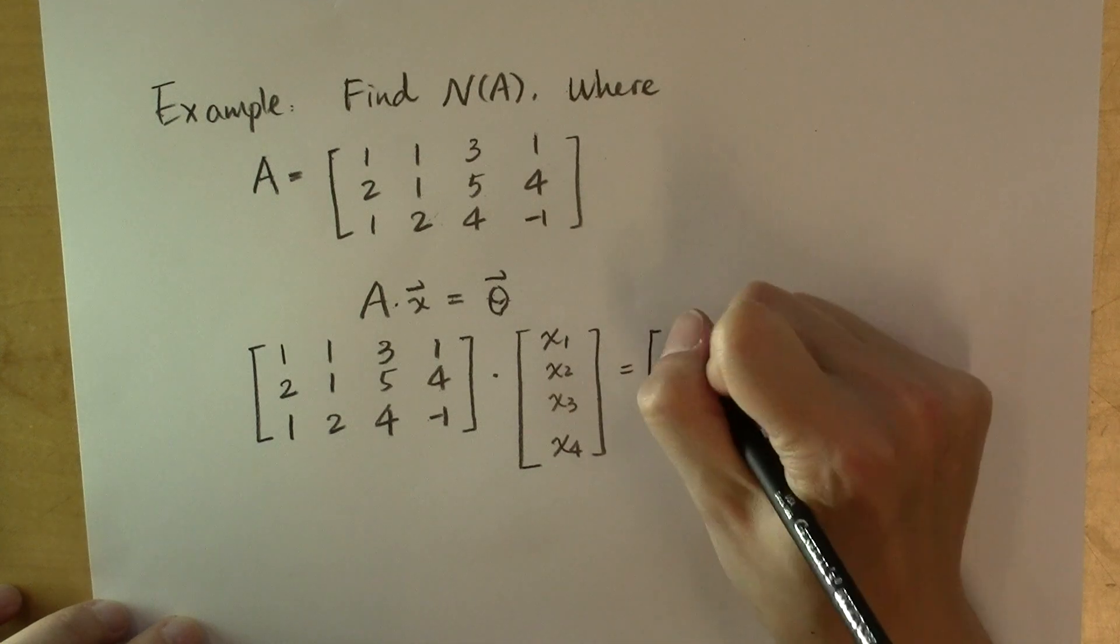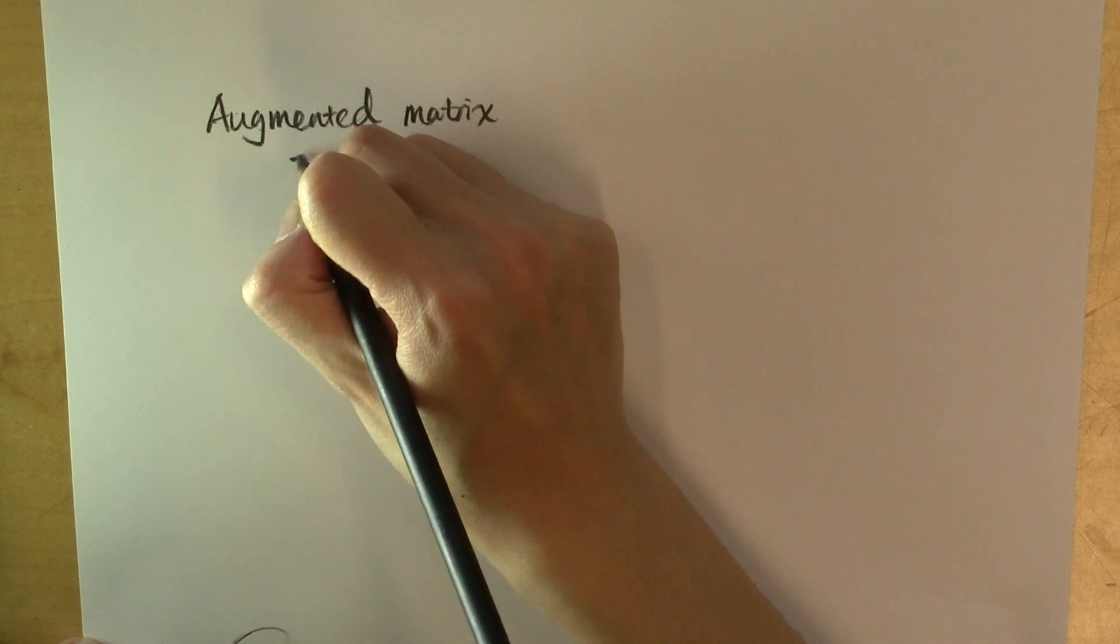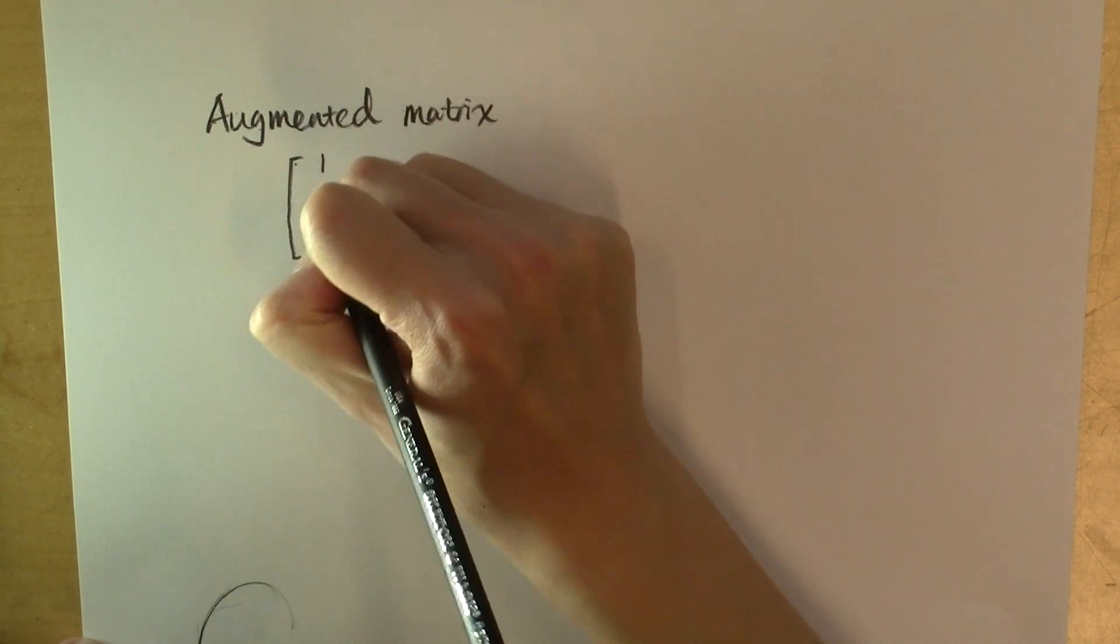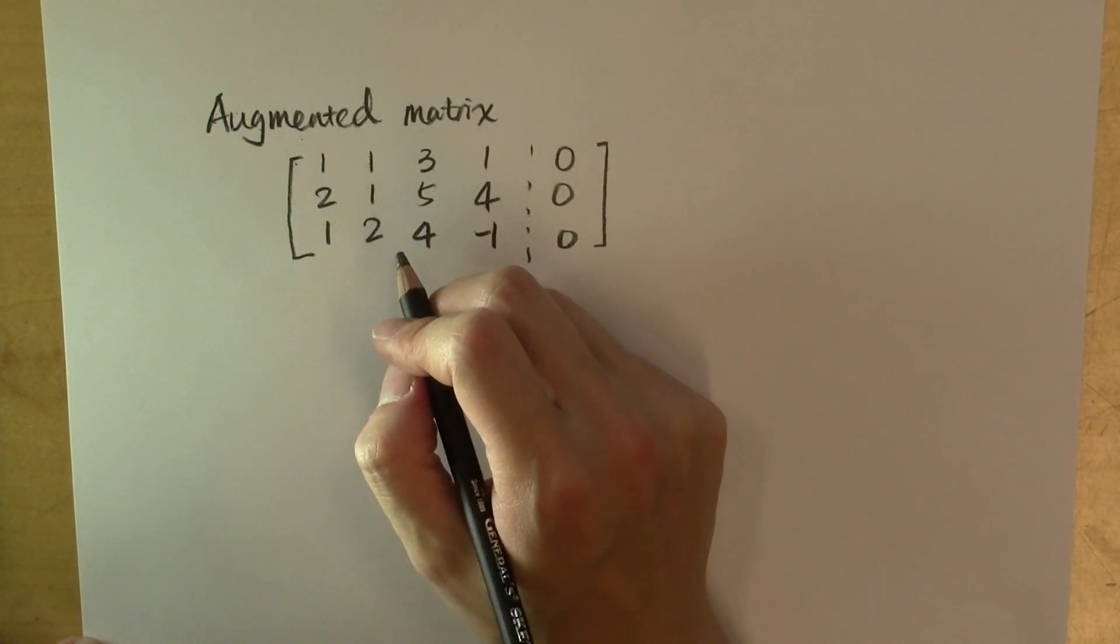And the right-hand side vector is the zero vector: 0, 0, 0. To solve this system, we form the augmented matrix and row reduce it to its echelon form.